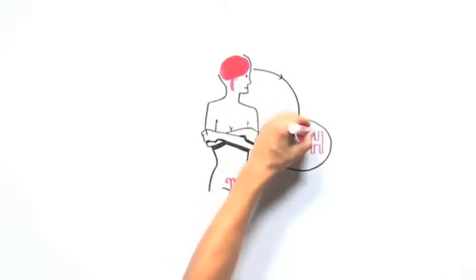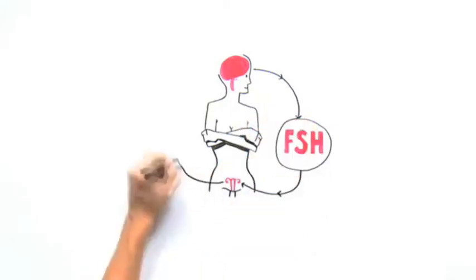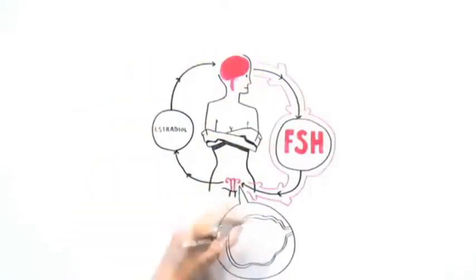FSH does two things. The first is it stimulates the ovary to produce estradiol, and the second to grow egg-containing follicles.